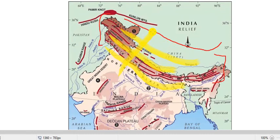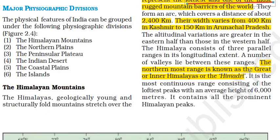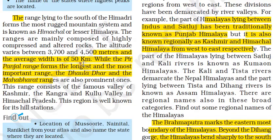As we move from south to north, the elevation increases. The northernmost parallel range, which is the highest, is called the Great Himalayas or Himadri. The Great Himalaya is the most continuous range, consisting of the loftiest peaks with an average height of 6,000 meters, and it contains all the prominent Himalayan peaks.